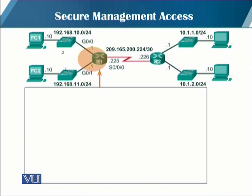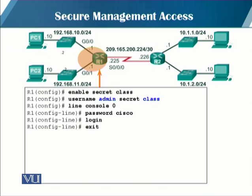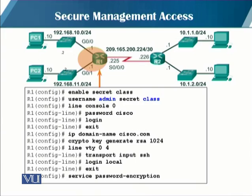In order to securely manage the interfaces on a router, you perform these commands: first, enable secret with a password class; then provide the username and password. The third command enters you into line console mode, where you provide the password, set login, and exit. Then you provide the domain 'cisco.com' and configure cryptography for encryption. Finally, you enter the VTY (virtual terminal line) mode and tell the router to accept SSH input with local login.